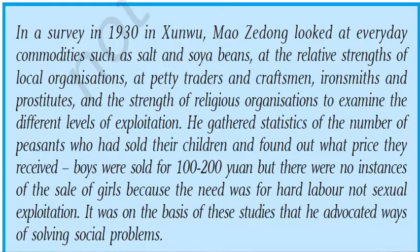In a survey in 1930 in Zunwu, Mao Zedong looked at everyday commodities such as salt and soya beans, at the relative strength of local organizations, at petty traders and craftsmen, iron smiths and prostitutes, and the strength of religious organizations — to examine the different levels of exploitation taking place. He gathered statistics on the number of peasants who had sold their children and found out what price they received. Boys were sold for 100 to 200 yuan, but there were no instances of sale of girls because the need was for hard labor, not sexual exploitation. It was on the basis of these studies that he advocated ways of solving social problems in China.